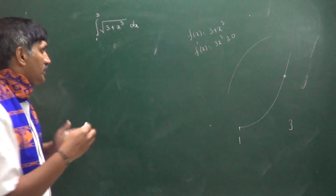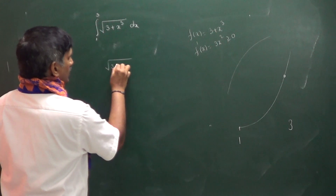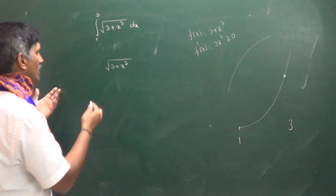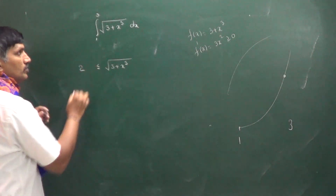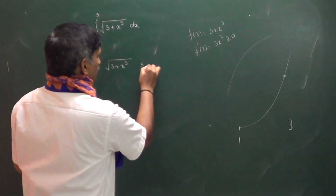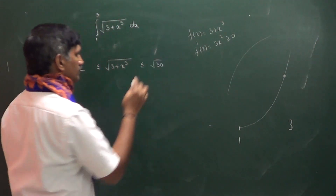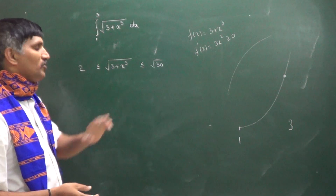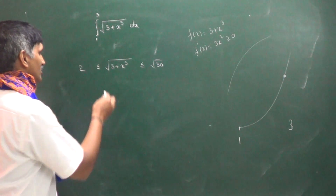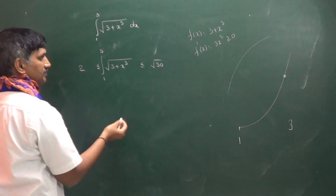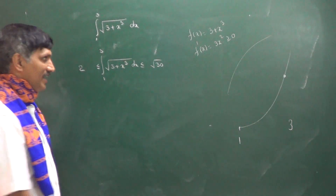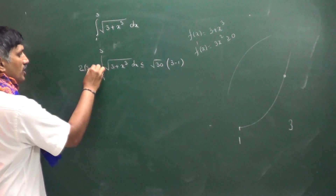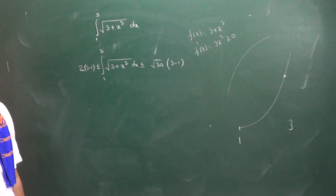The minimum value of √(3 + x³): substituting x = 1 gives √(3 + 1) = √4 = 2. The maximum value: substituting x = 3 gives √(3 + 27) = √30. So the expression lies between 2 and √30. Therefore, the integral from 1 to 3 of √(3 + x³) dx lies between 2·(3 − 1) = 4 and √30·(3 − 1) = 2√30.